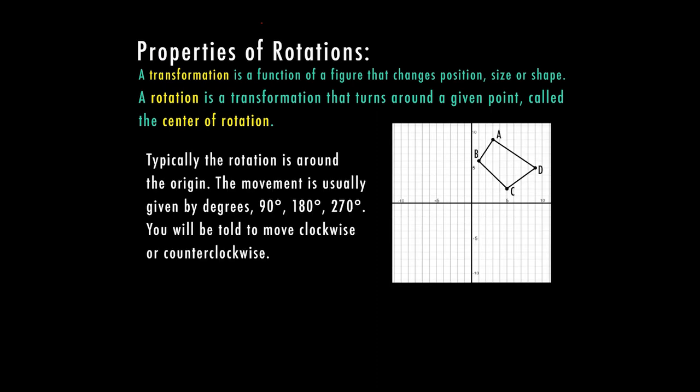Typically the rotation is around the origin. The movement is usually given by degrees, typically in 90 degrees, 180 degrees, and sometimes 270 degrees. You'll also be told to move either clockwise or counterclockwise.